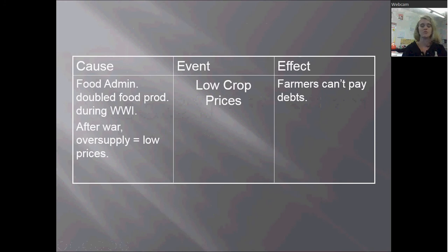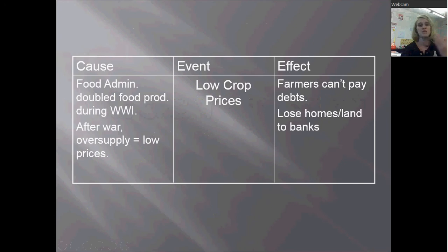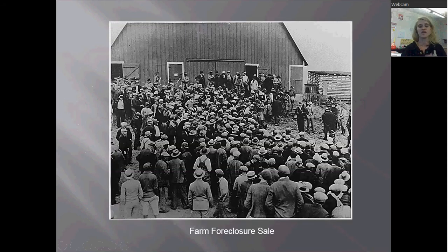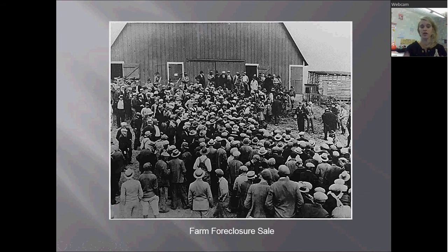Farmers are unable to pay their debts, and if they can't pay their debts, they're going to lose their farm. When they can't pay, the banks take their farms — foreclose on them. Suddenly you've got all these farmers who are unemployed. Here's a sign advertising a farm foreclosure — pretty desolate. This is a foreclosure sale where the farm is going up for auction. A lot of farmers are losing their livelihood during the 1920s, and that's a major problem.